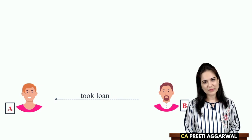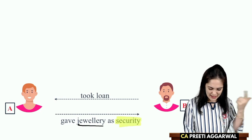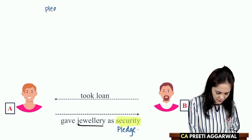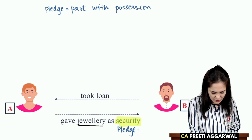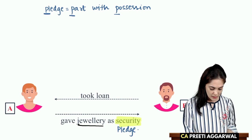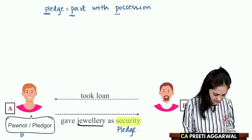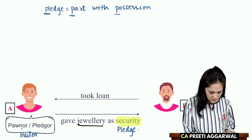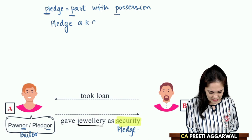Example: A took a loan from B and gave his jewellery as security. As soon as we hear the word 'security,' we know this is pledge. Pledge means to part with possession — PPP. In pledge we transfer possession; in mortgage we don't transfer possession. The person who pledges the goods is known as the Pledger or Pawner. Pledge is also known as Pawn — like the TV show Pawn Stars. In India, jewellers perform this function.